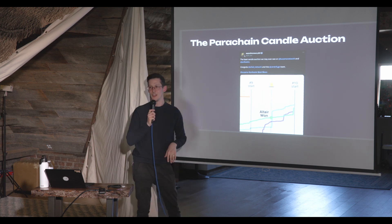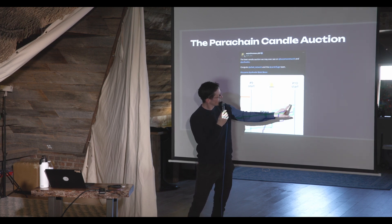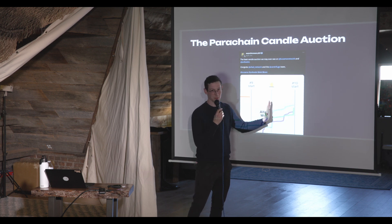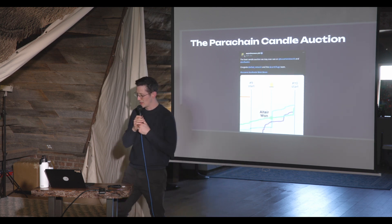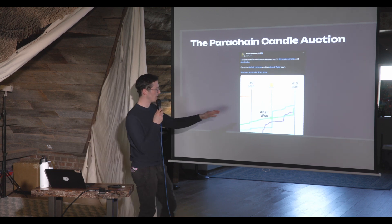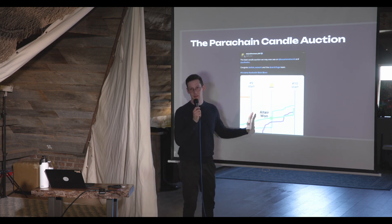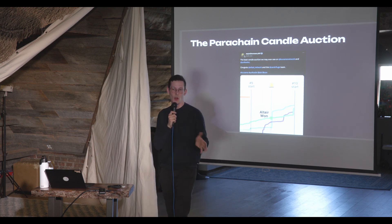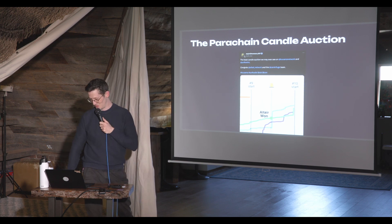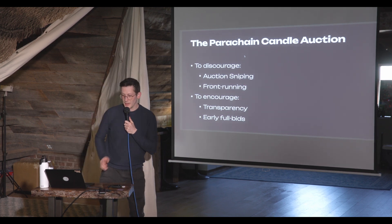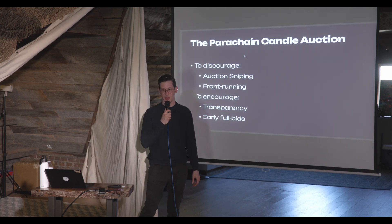We've seen surprising outcomes, such as on Kusama where Altair Network — Centrifuge's network — won a slot even though another chain was winning for the majority of the time. Because the random function determined the auction ended when Altair was in the lead, Altair won the slot. This design really avoids sniping at the end and incentivizes teams to front-load their bids, making the process more transparent. It discourages auction sniping, front-running, and encourages early full bids.